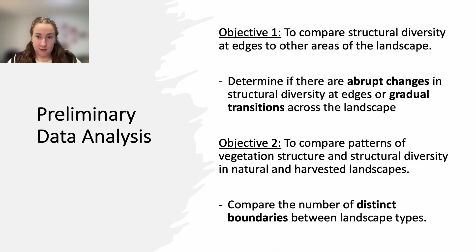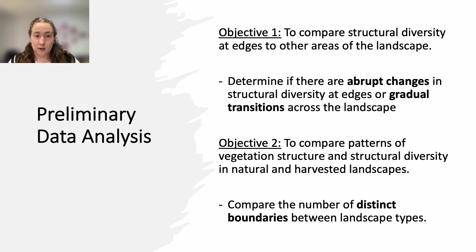For this preliminary analysis, we want to compare structural diversity at edges to other areas of the landscape by determining if there are abrupt changes or gradual transitions, to answer objective one. For objective two, we want to compare patterns of vegetation structure and structural diversity in both natural and harvested landscapes by comparing the number of distinct boundaries between the two landscape types.